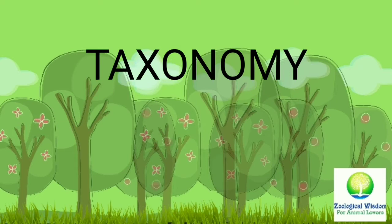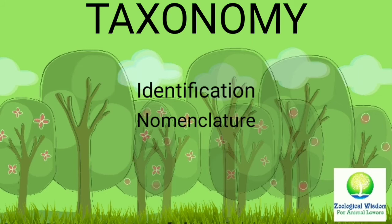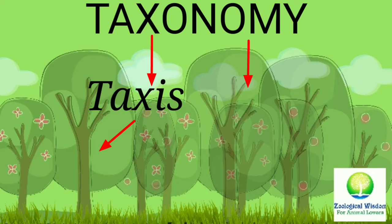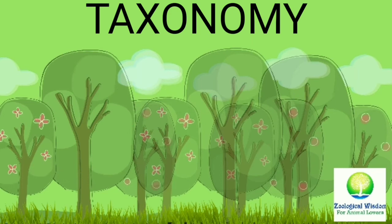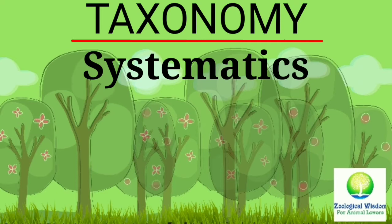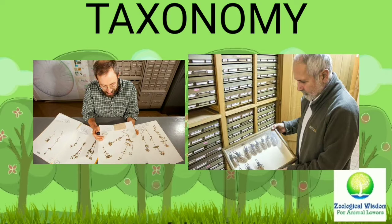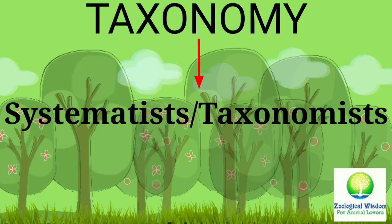Starting with Taxonomy — one of the oldest and most fundamental branches of biology dealing with identification, nomenclature, and classification of living organisms — is called Taxonomy. It is derived from two Greek words: Taxis meaning Arrangement and Nomos meaning Law. It is also called Systematics, derived from the Greek word Systema meaning Systems, Orders, or Sequences. Scientists who study and contribute to the classification of organisms are known as Systematists or Taxonomists.